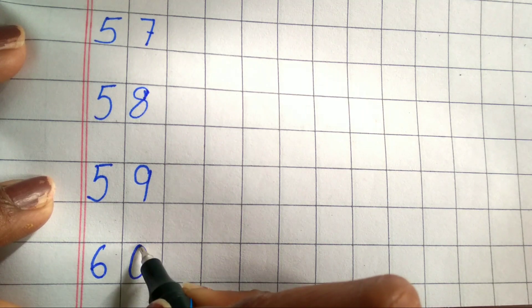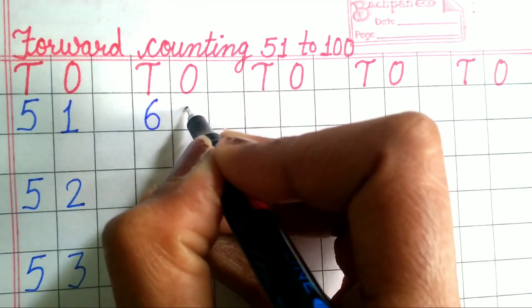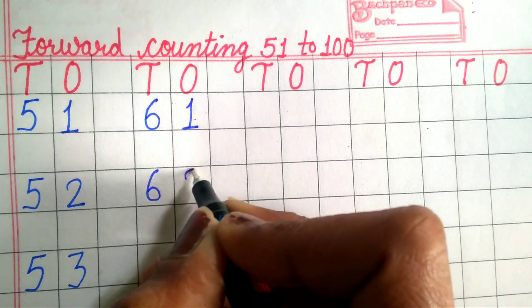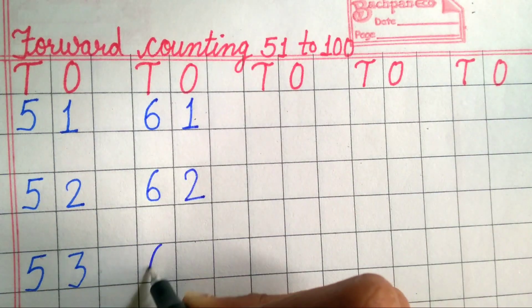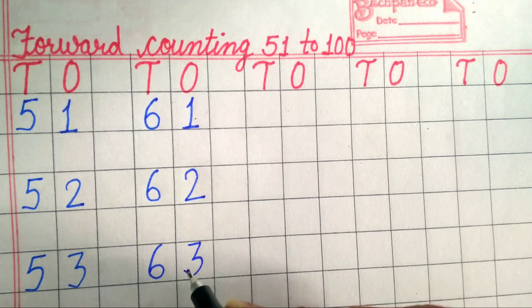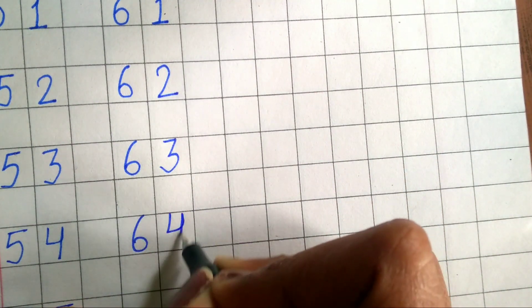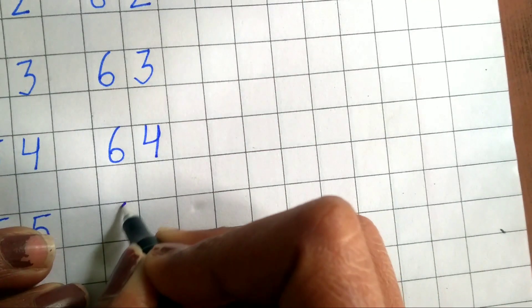60, 60, 61, 61, 62, 62, 63, 63, 64, 64, 65, 65.